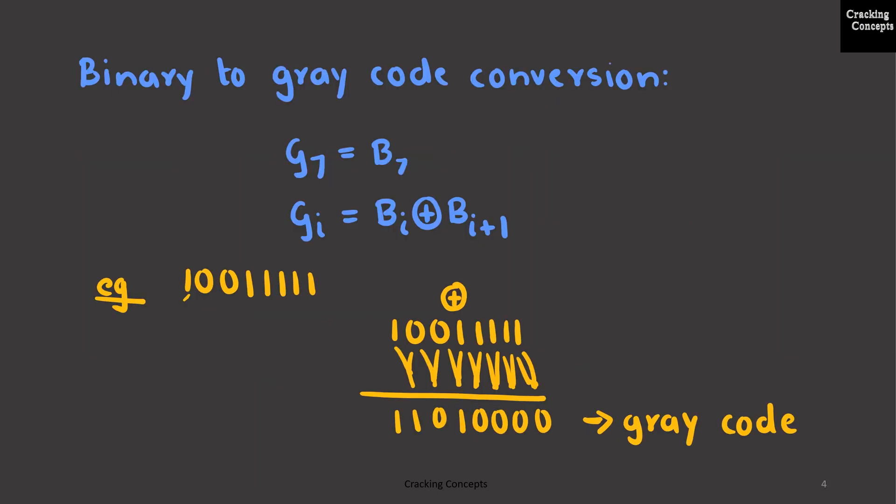Now we will see how to convert a binary number to Gray code. As given here, the MSB of the Gray code will be the same as that of the binary number. For every other bit, GI will be given as XOR of BI and BI plus 1.